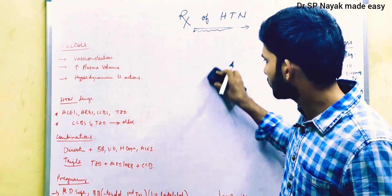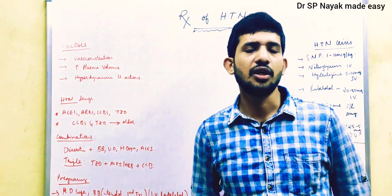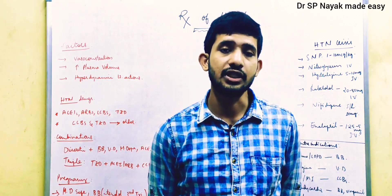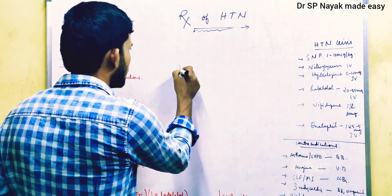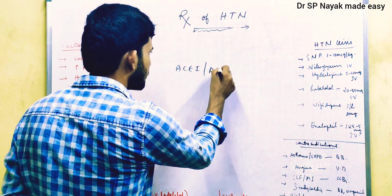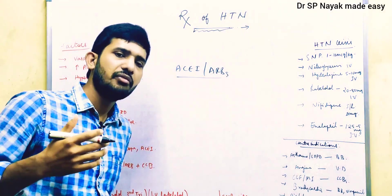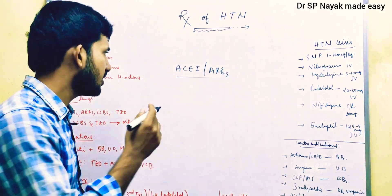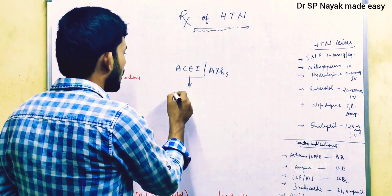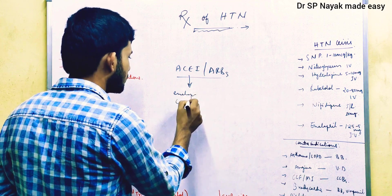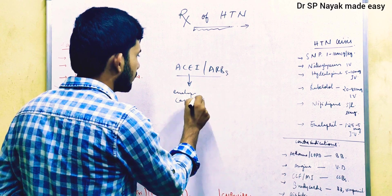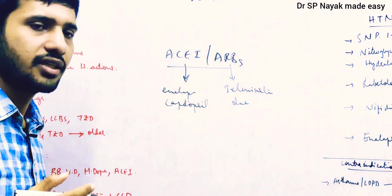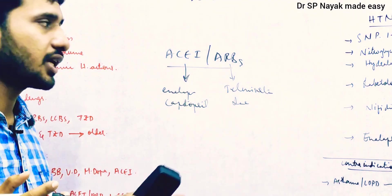In pharmacotherapy, we start with monotherapy. The first-line drugs are ACE inhibitors or ARBs. ACE inhibitors have many adverse effects, and to overcome those we usually give ARBs. Examples of ACE inhibitors include enalapril and captopril; examples of ARBs include telmisartan and losartan.